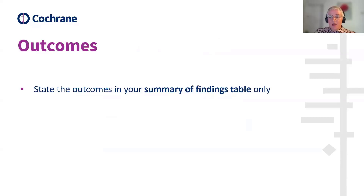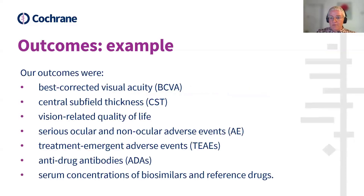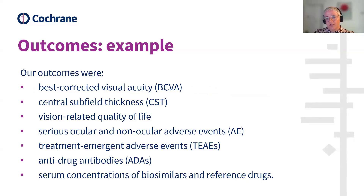On to outcomes. Under this heading, you only state the most important outcomes that feature in the summary of findings table — you do not need to state every outcome listed under the PICO section of your review. The authors of the example abstract stated seven outcomes under this heading, and they are the same seven important outcomes that were in their summary of findings table for which they performed GRADE ratings.